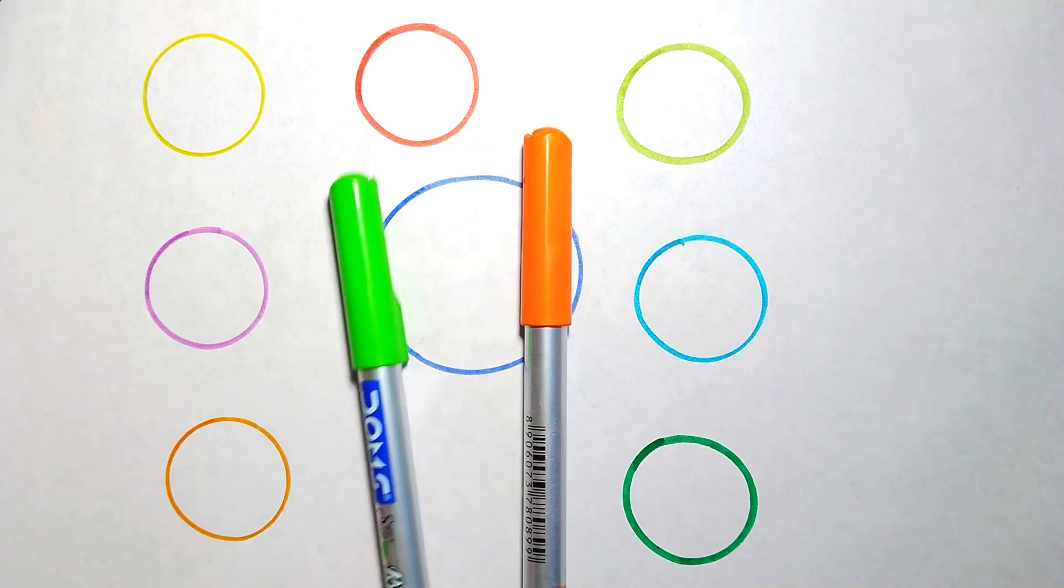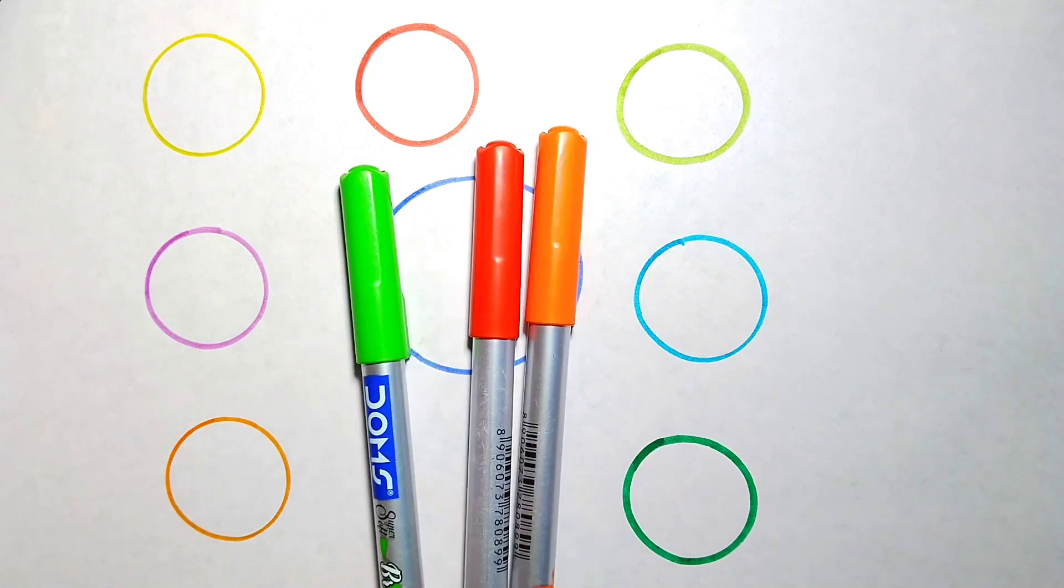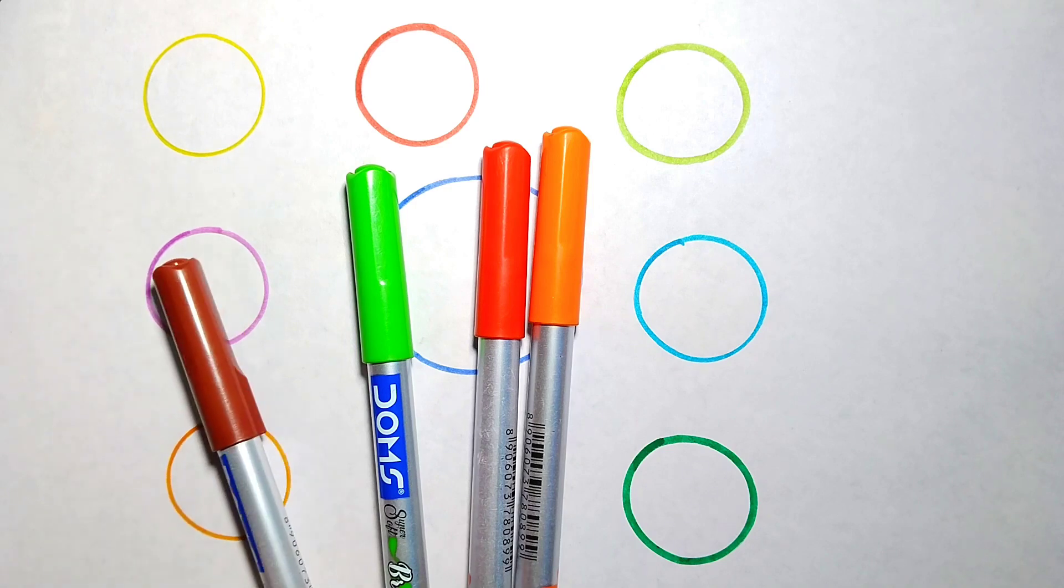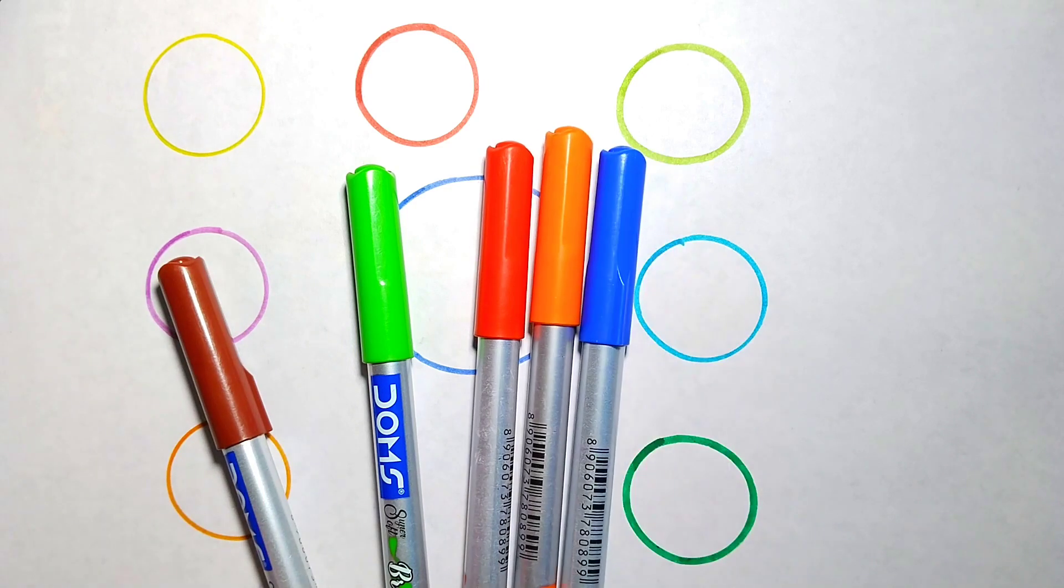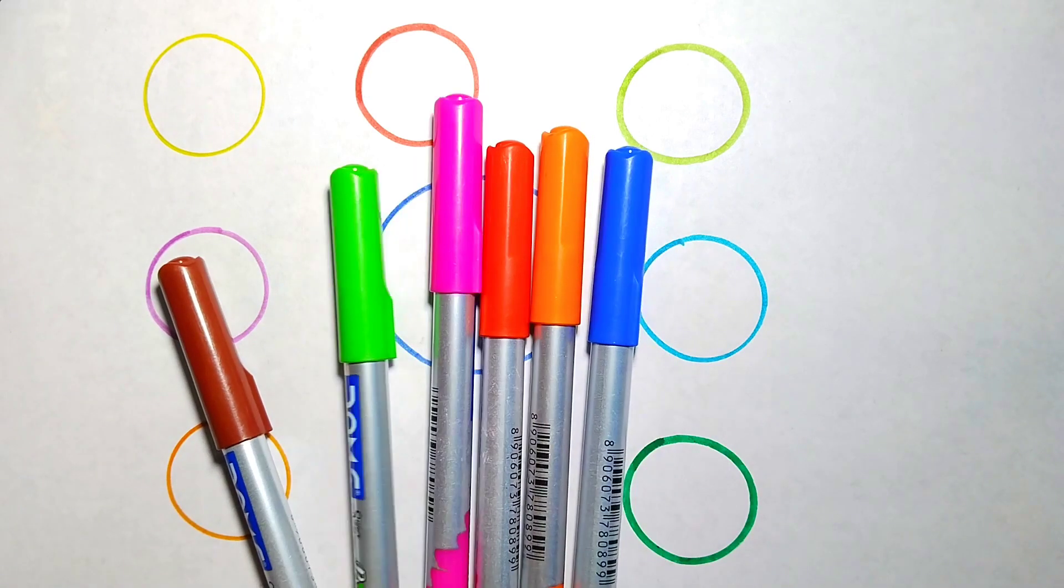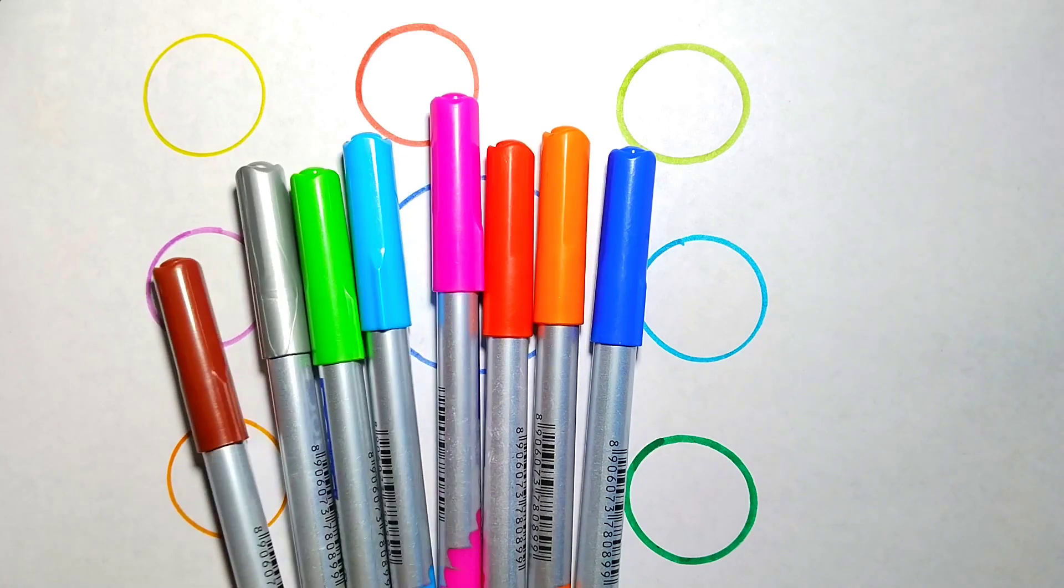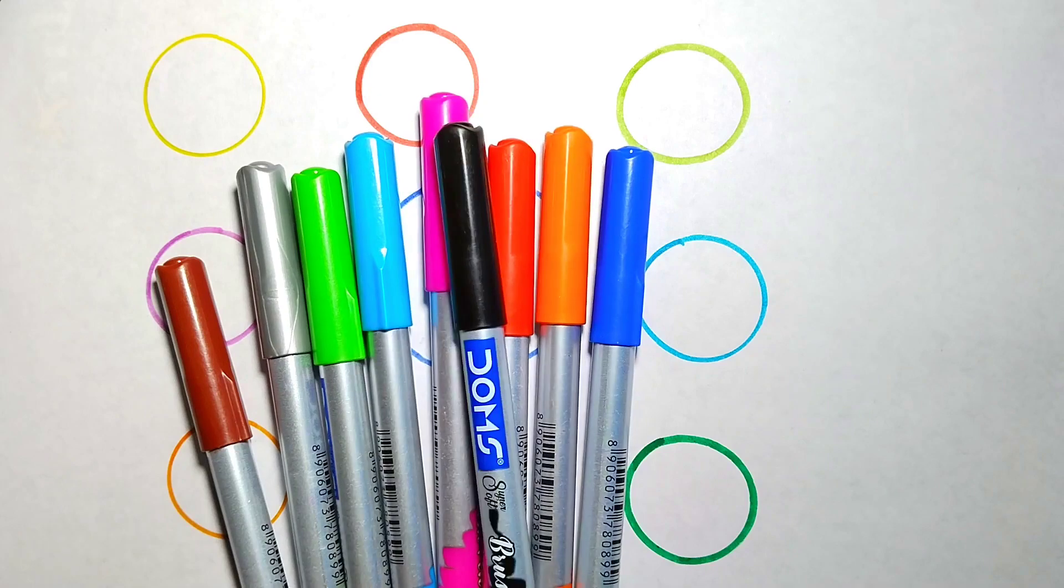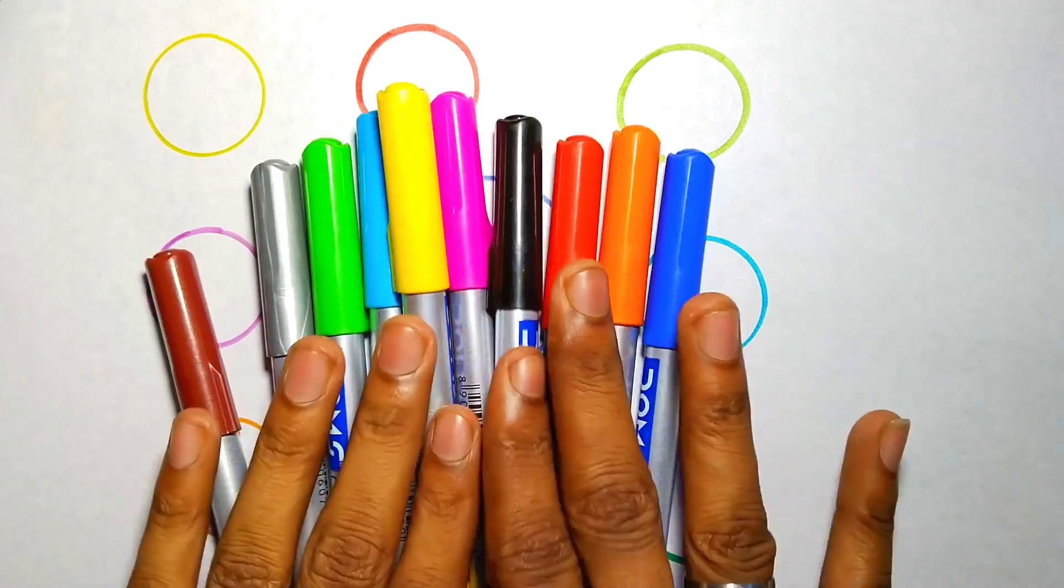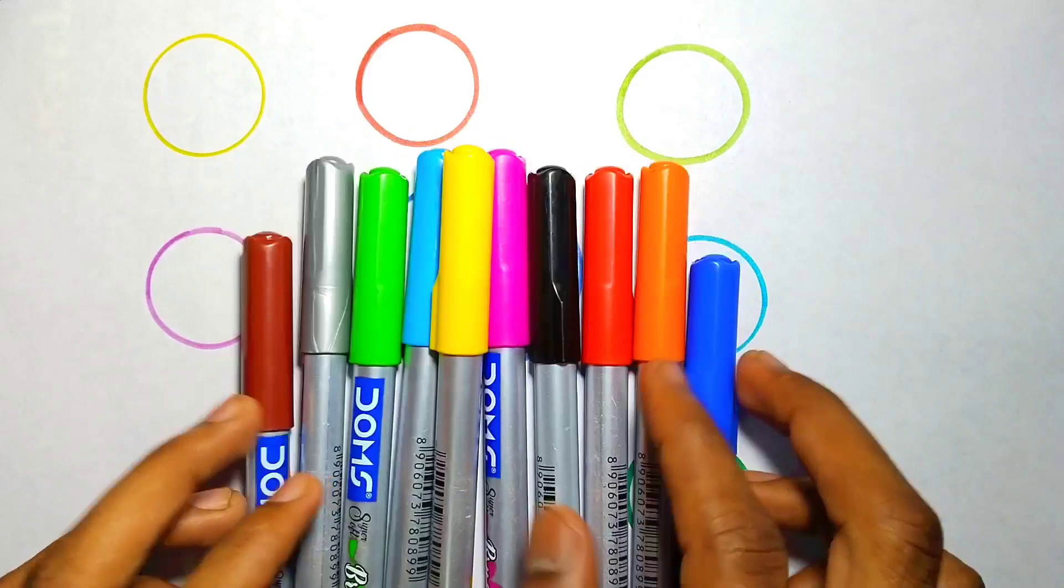Orange color, light green color, red color, brown color, blue color, pink color, silver color, sky blue color, black color, and yellow color. Today we are learning Alphabets.